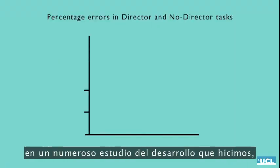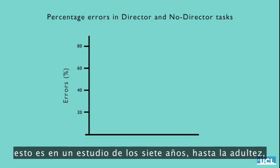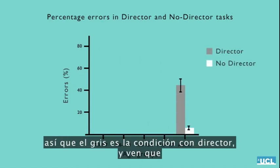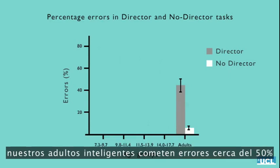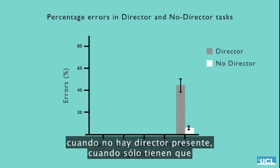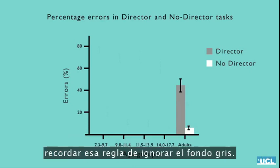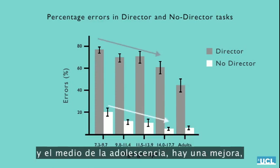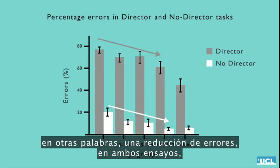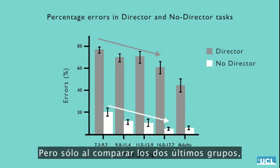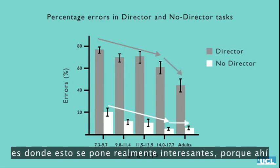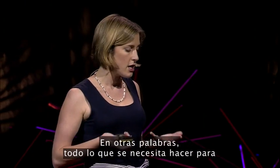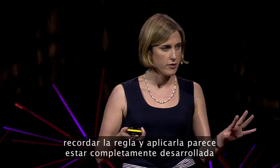Looking at the percentage errors in a large developmental study ranging from age 7 to adulthood: the gray bars show the director condition, and our intelligent adults are making errors about 50% of the time, whereas they make far fewer errors when there's no director — when they just have to remember the rule of ignoring the gray background. Developmentally, these two conditions improve in exactly the same way between late childhood and mid-adolescence — a reduction of errors in both conditions. But comparing the mid-adolescent group and the adult group, there is no continued improvement in the no-director condition. Everything needed to remember and apply the rule seems to be fully developed by mid-adolescence.